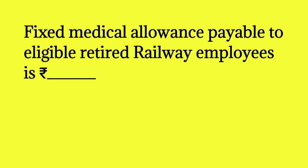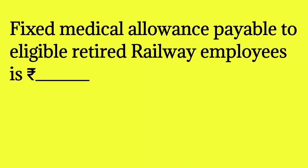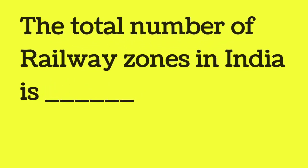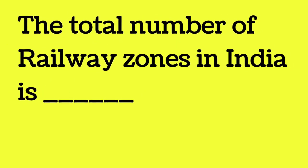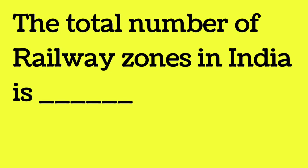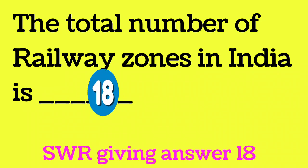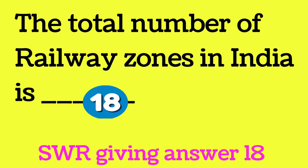Fixed Medical Allowance (FMA) payable to eligible retired railway employees is now Rs. 1,000. The total number of railway zones in India — this question is confusing. Either 17 or 18 is seen in different sources. In SWR, 18 is given, and 18 is believed to be correct.